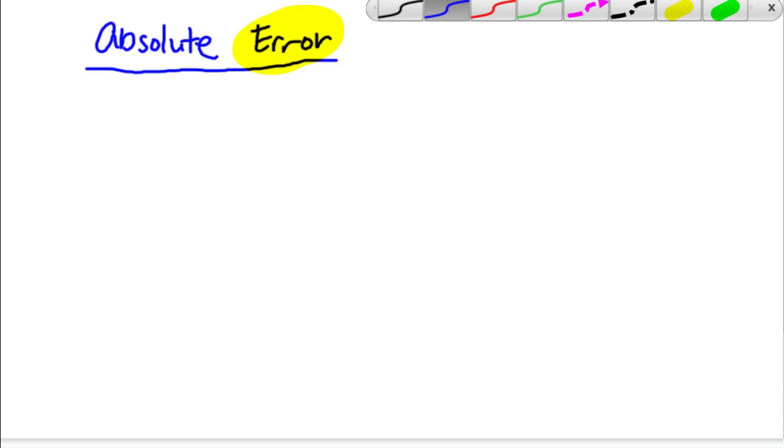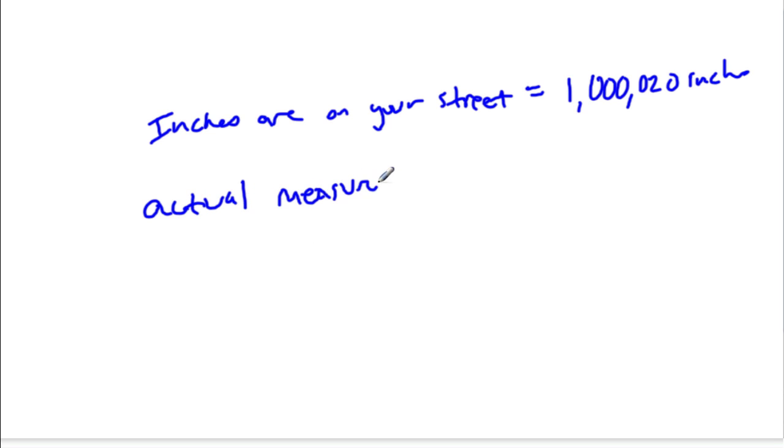For example, let's say you're trying to measure how many inches are on your street. How long is your street? Let's say you get 1,000,000 inches and 20, so 1,020,000 inches. But let's say the actual measurement, what it really is, is equal to 1,000,000 inches exactly.